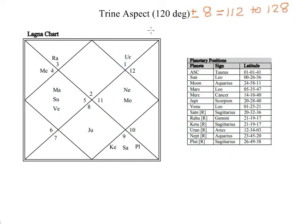Today we are going to learn about the trine aspect. What is a trine aspect? When two planets are 120 degrees apart from each other, it is called a trine aspect. There is an orb of 8 degrees, so we can say when two planets are 112 to 128 degrees apart from each other, those two planets are in trine aspect.